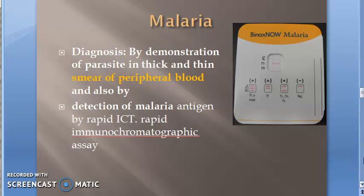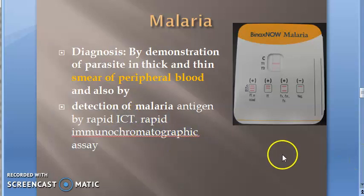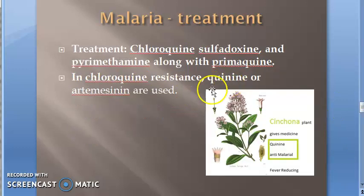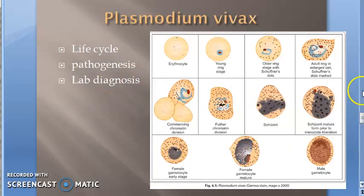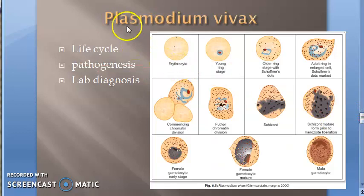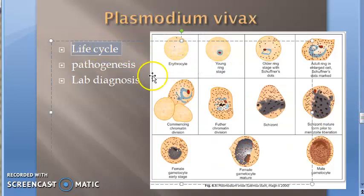Diagnosis is done by ICT — rapid immunochromatographic test. Treatment is with chloroquine. Now let us move on to the life cycle of Plasmodium vivax.